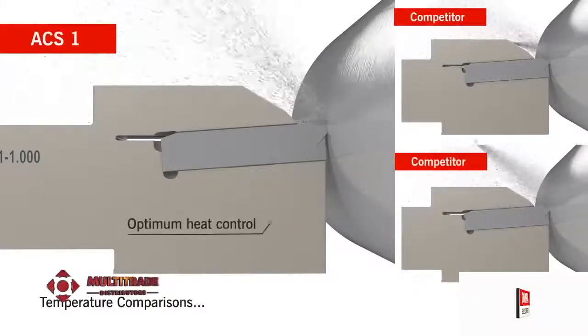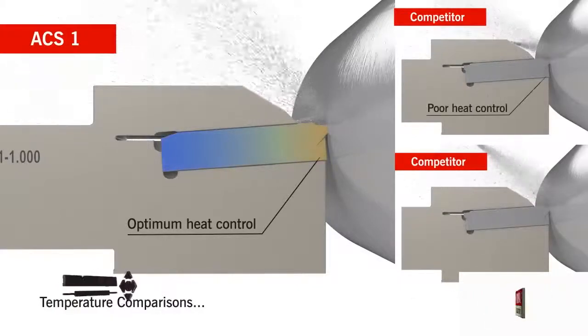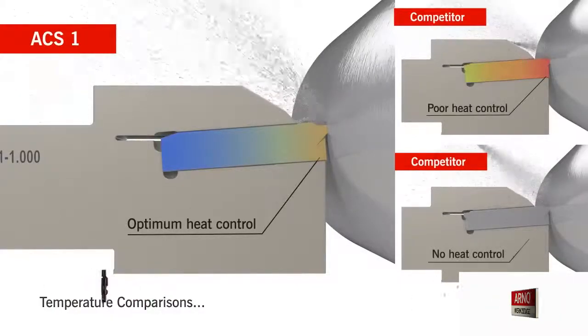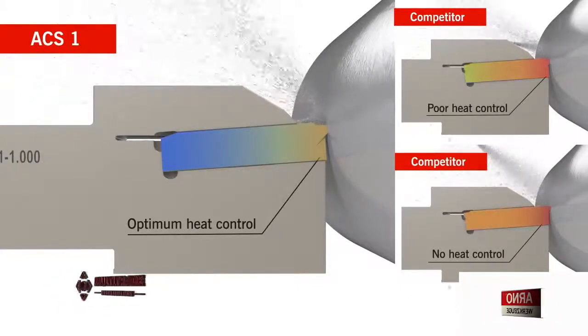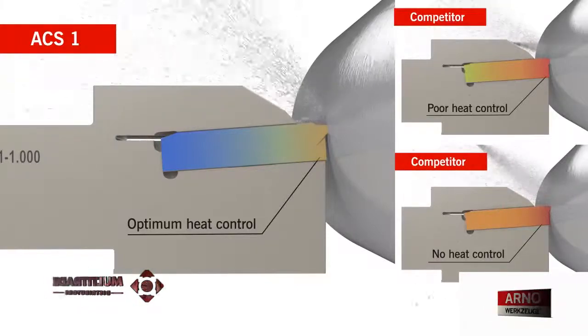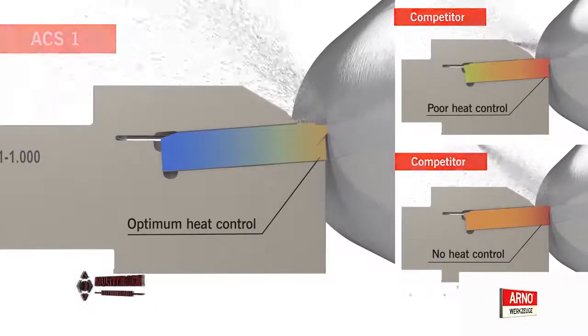In this illustration, you can see that when the Arno ACS-1 directs coolant across the top of the insert, it provides better immersion of the cutting edge compared to other systems, which in some cases may not get coolant to the cutting edge at all.